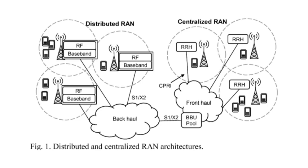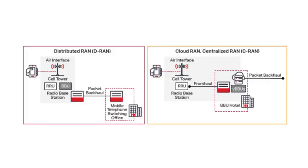In the distributed RAN model, RRU and BBU are collocated at every cell site. Each cell site with all its radio functions is distributed and connected back to the core network through backhaul, which links the access network to the core network. Before moving forward, let me explain the abbreviations and terms without going into too much detail.